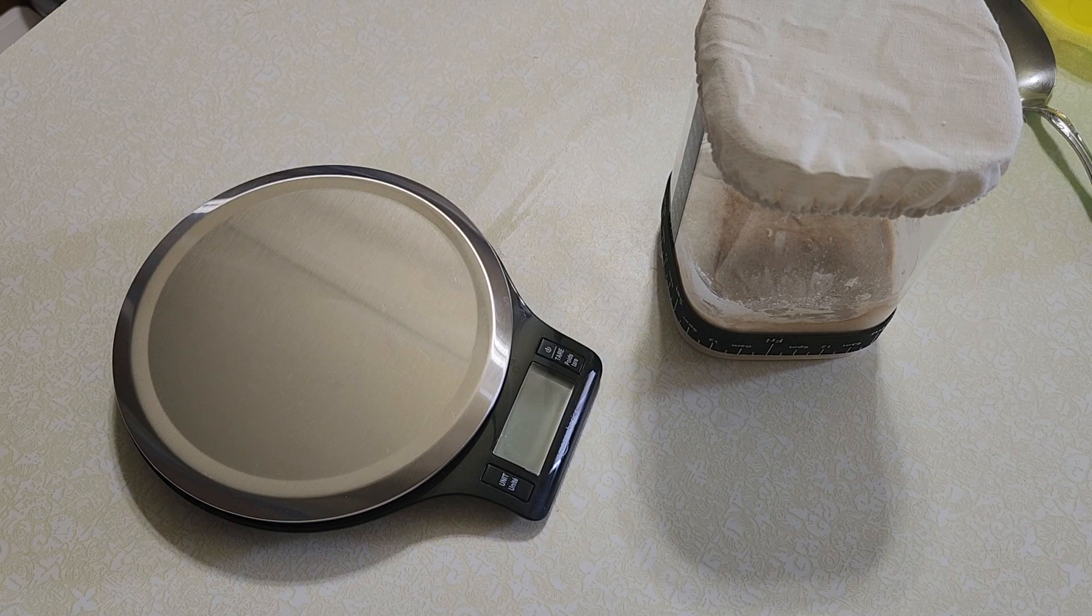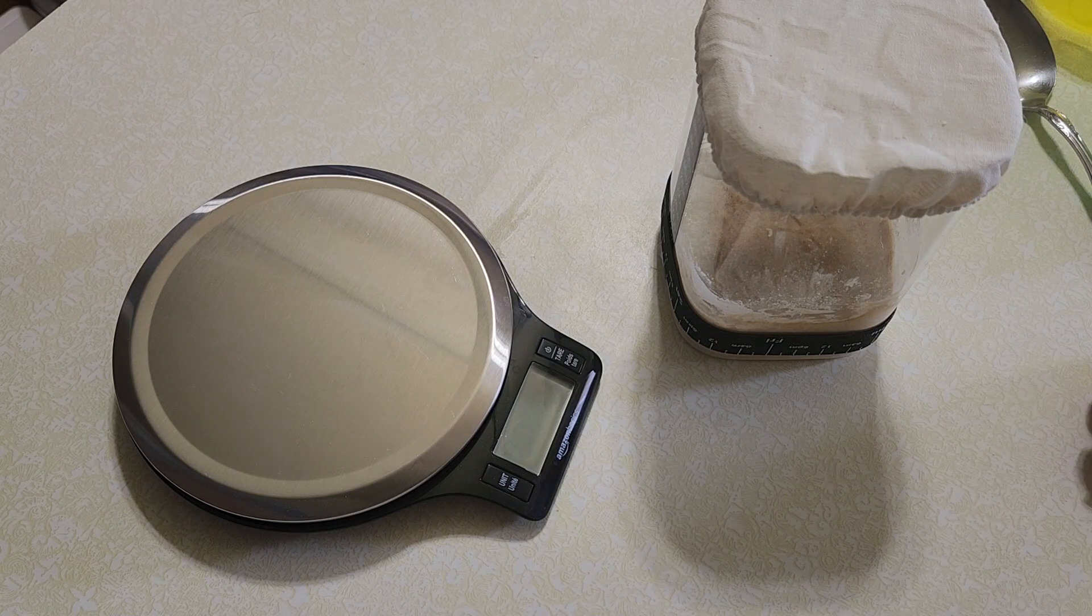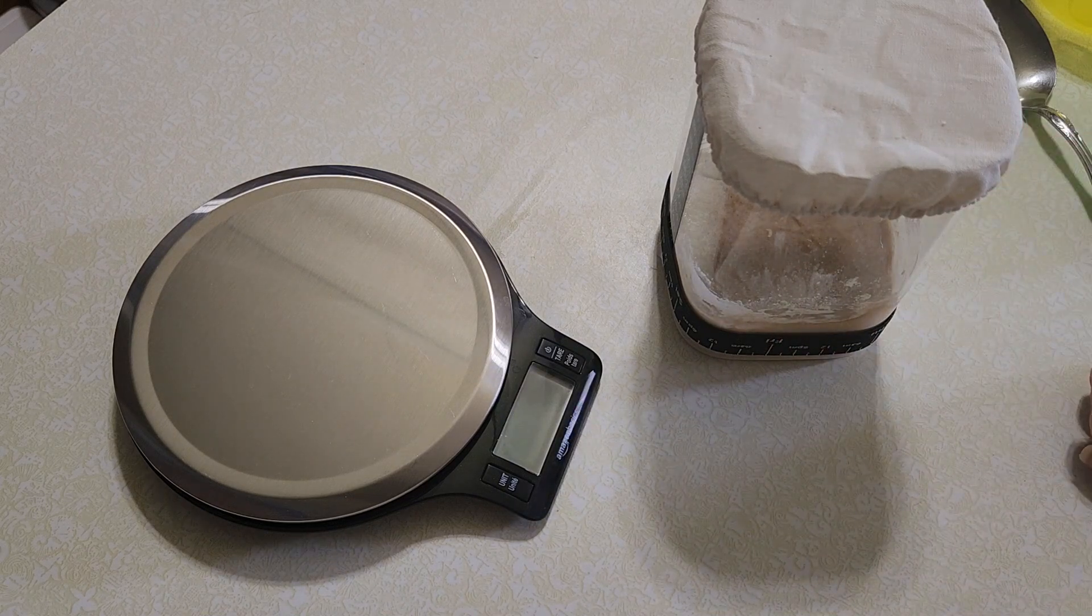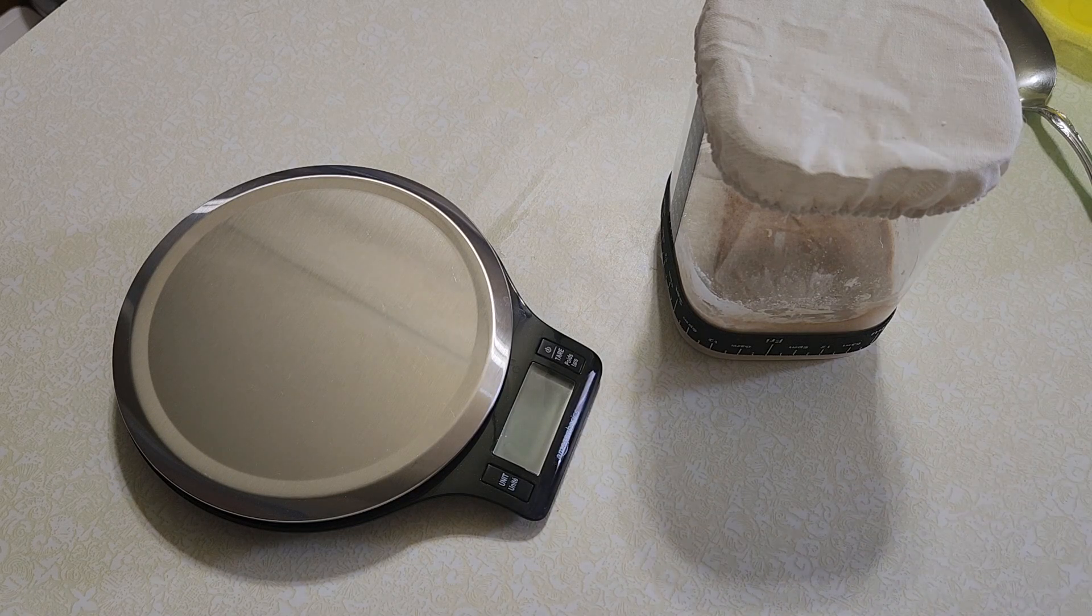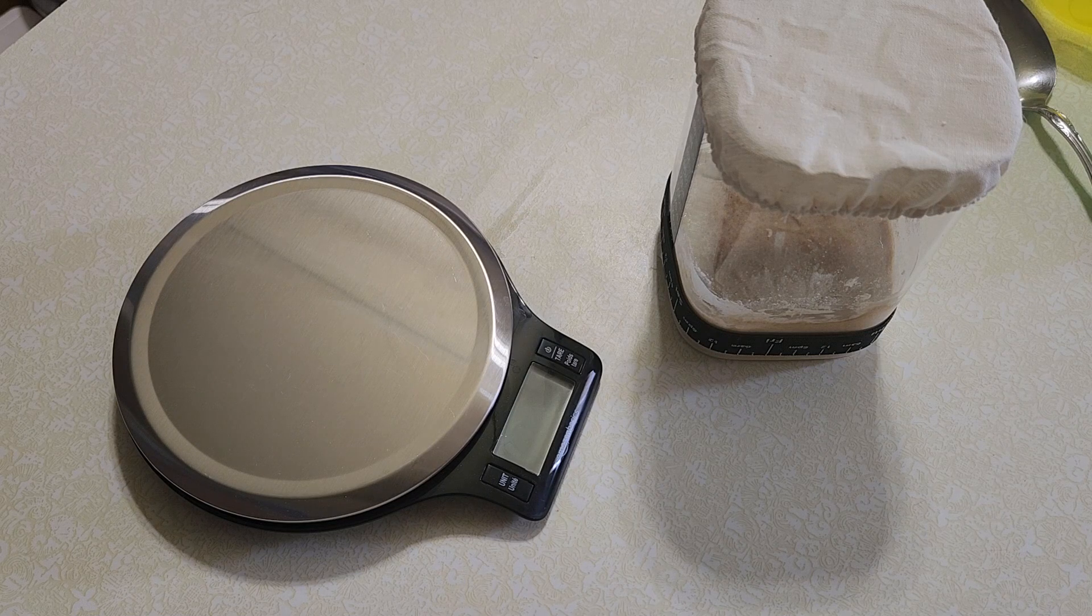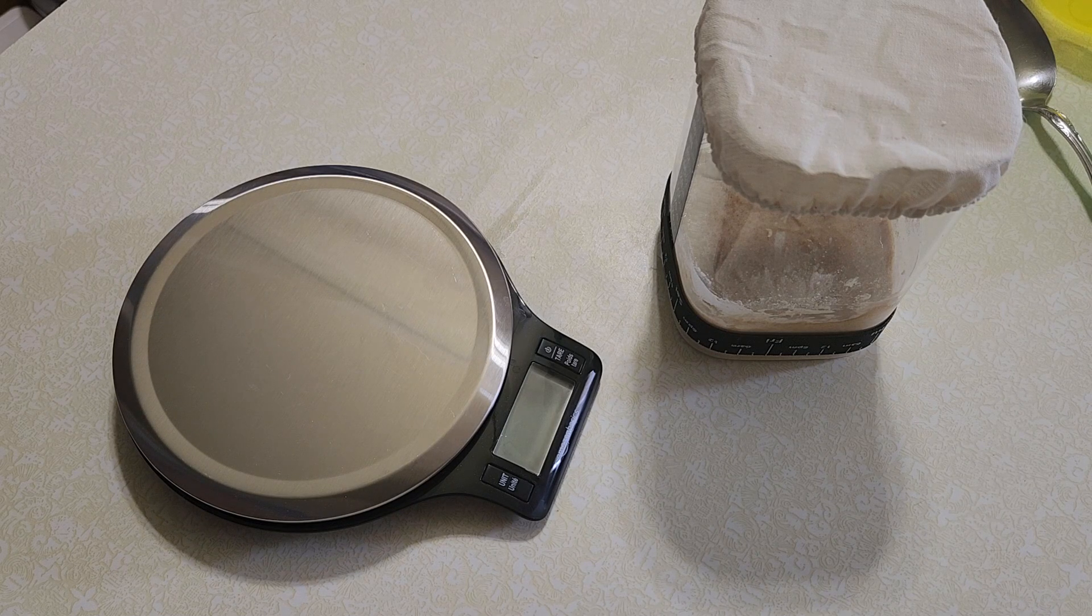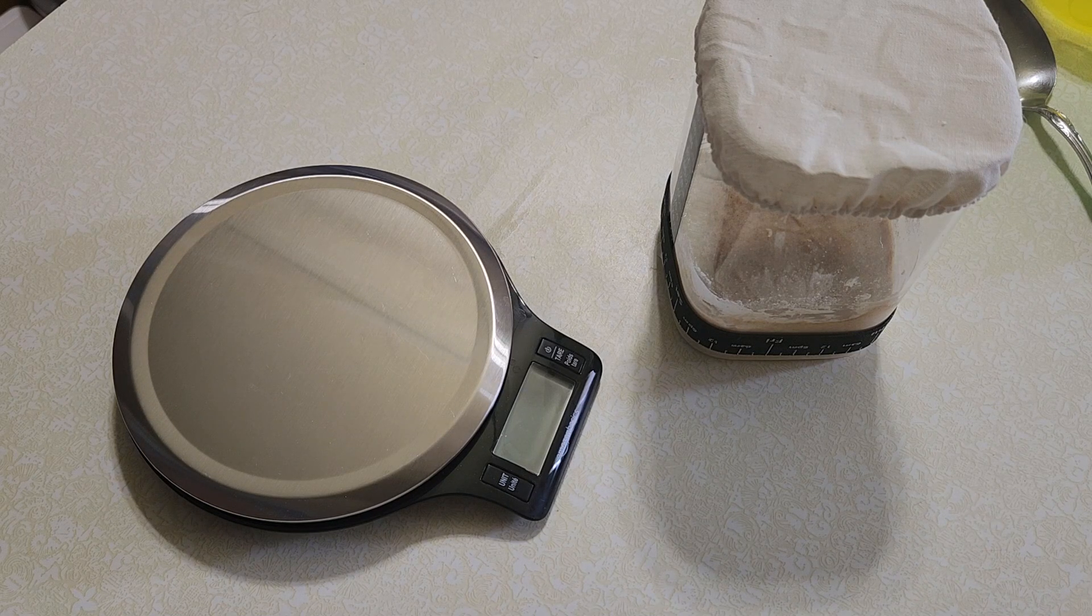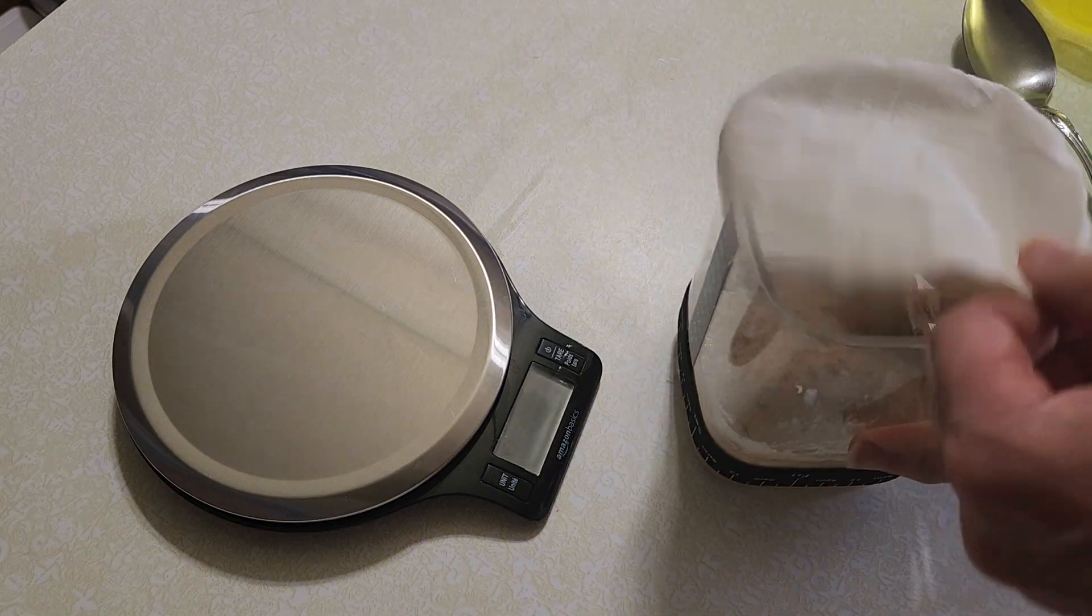But it is time for us to change the recipe a bit. Now we're only going to use 20 grams of the starter mix today, and then we're going to use 30 grams of the rye flour and 70 grams of bread flour, and then the same 115 grams of water. So we got some scooping to do.